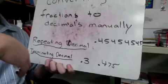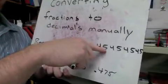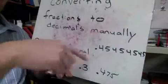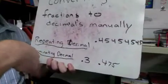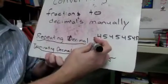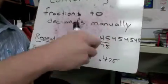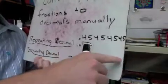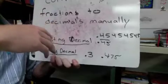A repeating decimal is something that continues in some kind of pattern. For instance, if my answer was 0.4545454545... and it kept going 4-5, that would be a repeating decimal. The way I'd write that is 0.45 with a line over the 45, meaning that portion just keeps repeating.